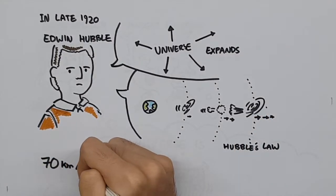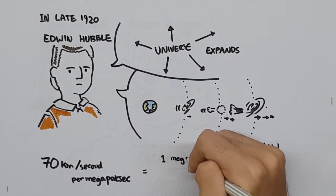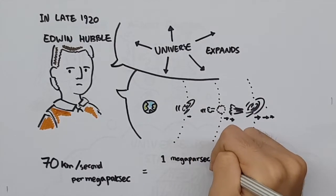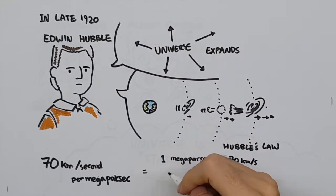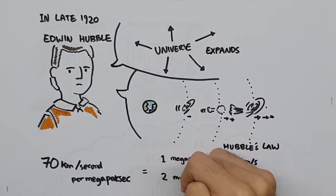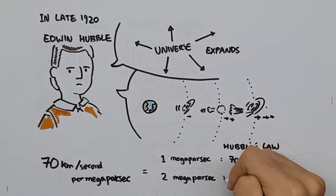The universe expands at about 70 km per second per megaparsec. This means that a galaxy 1 megaparsec, or 3.26 million light-years away from us, recedes at about 70 km per second, while another galaxy 2 megaparsecs or 6.52 million light-years away from us, recedes at 140 km per second, and so on.